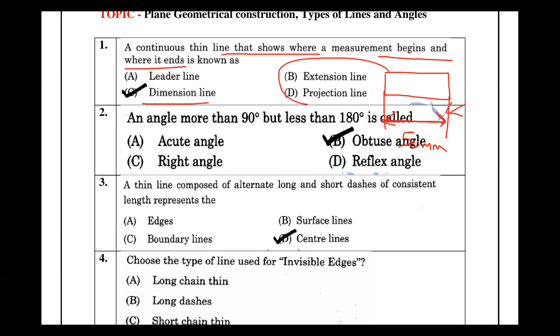There are two meanings: projection line and extension line. Next, there is a small circle used to denote a line. That line is called the leader line.